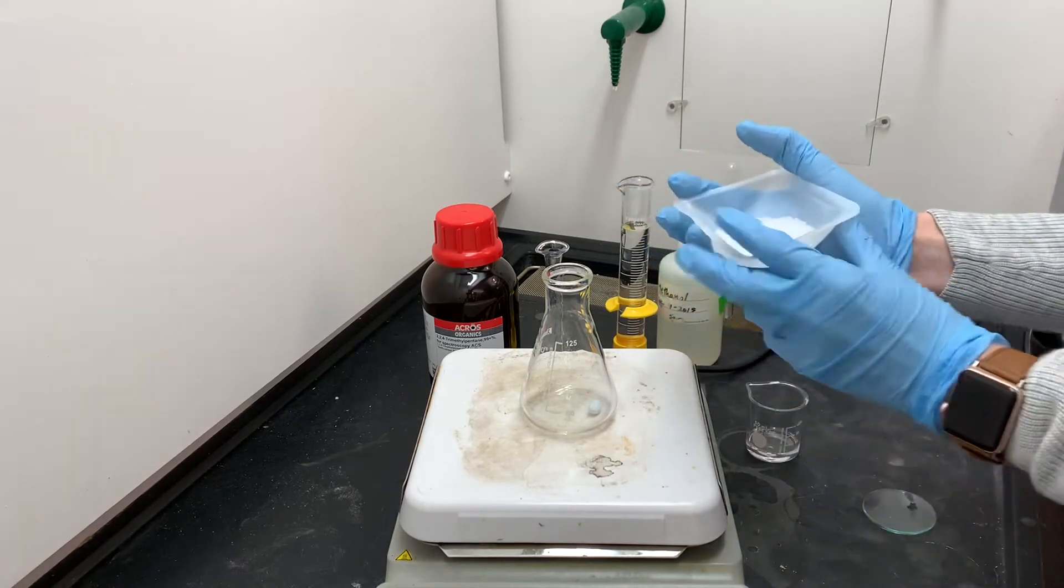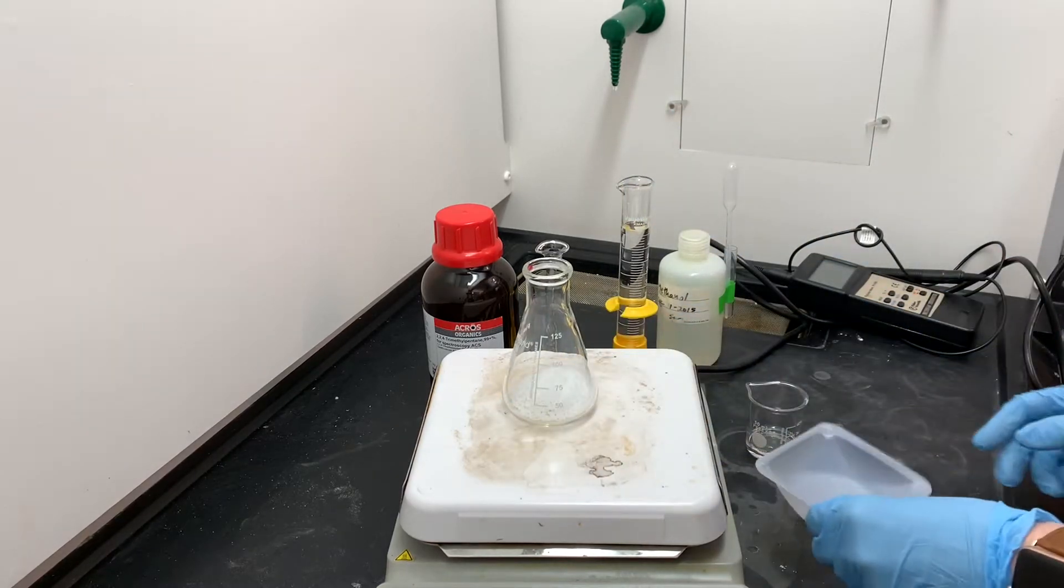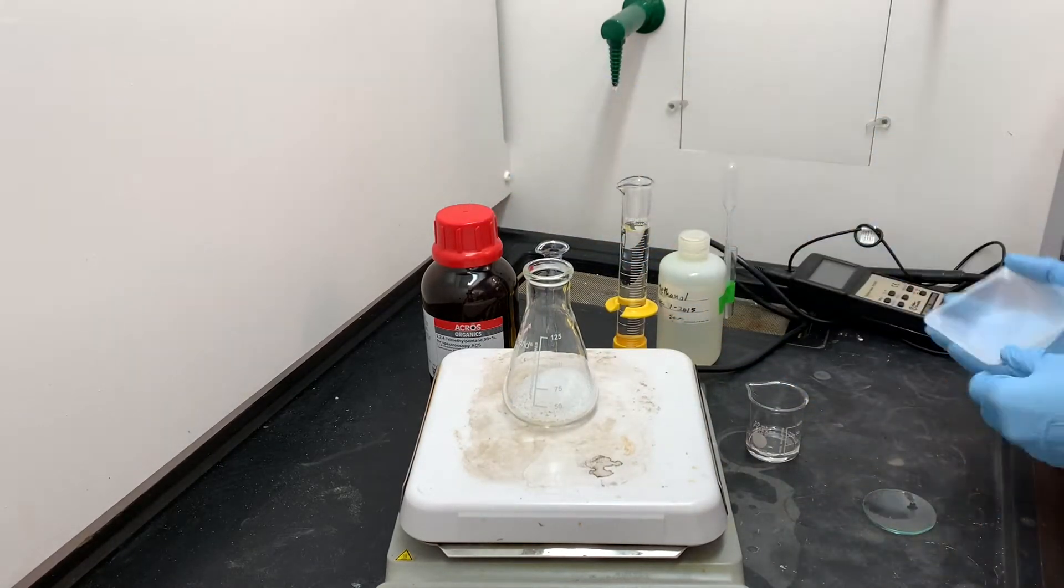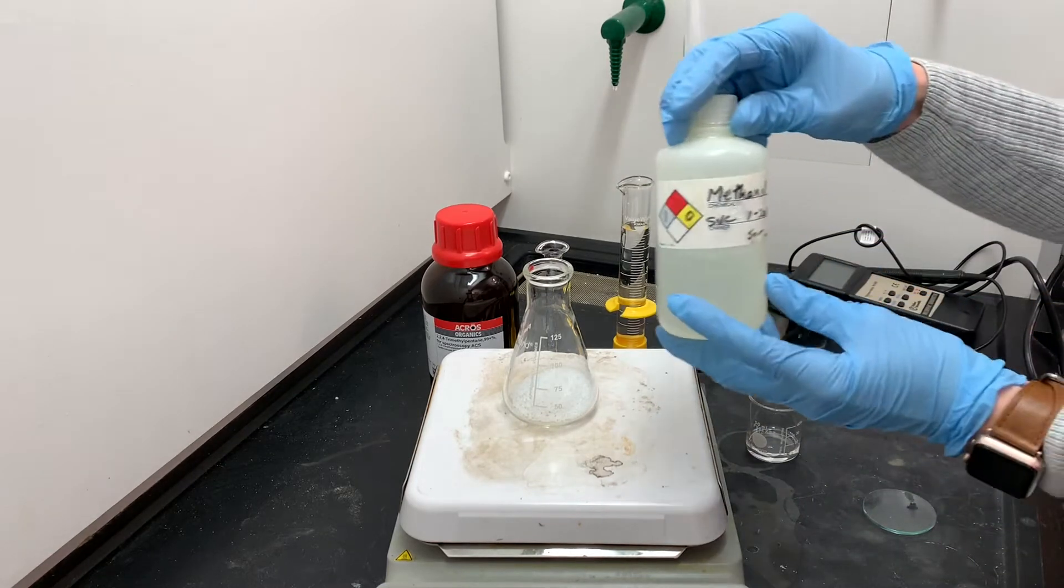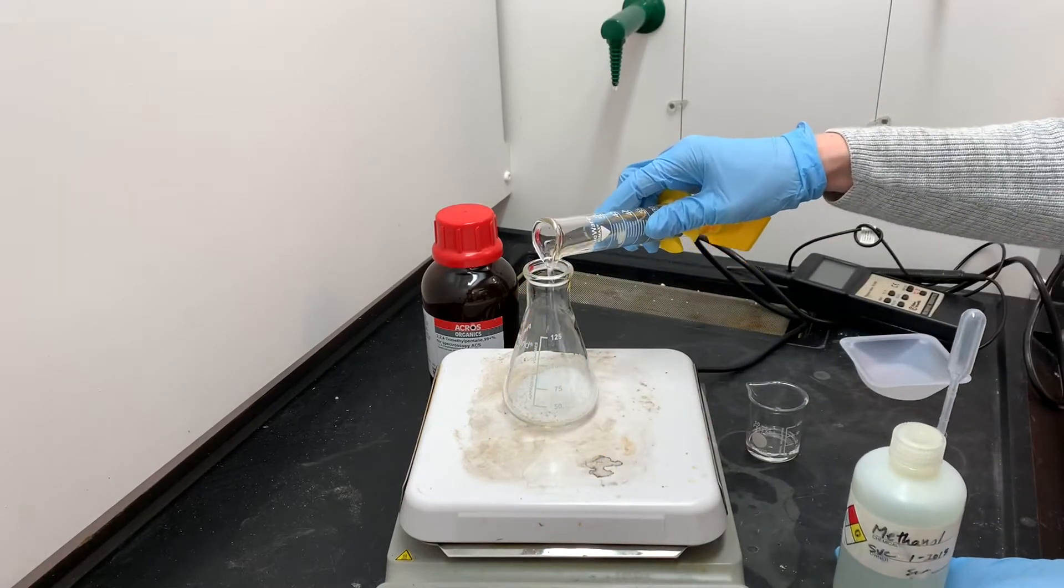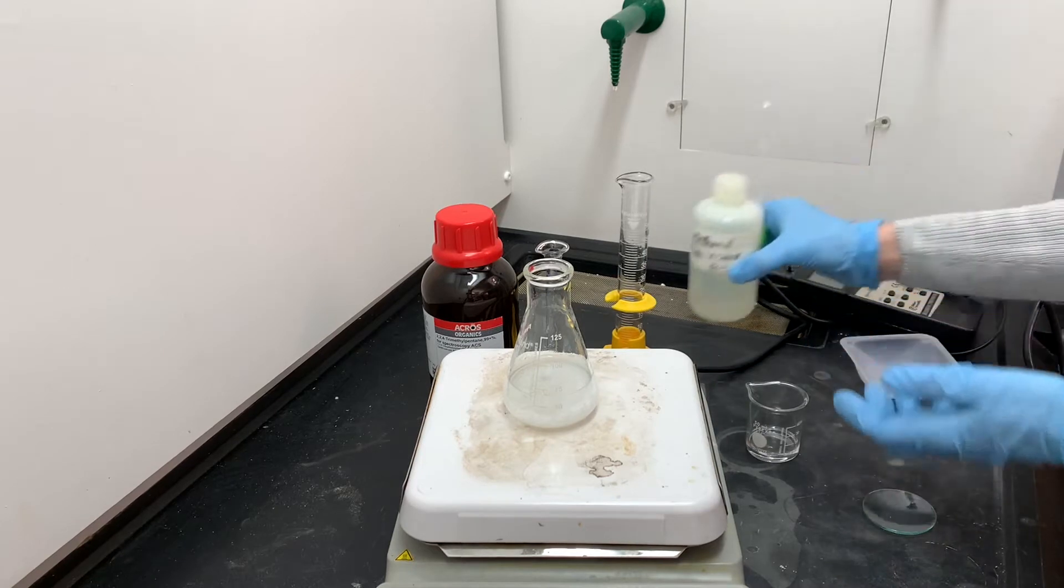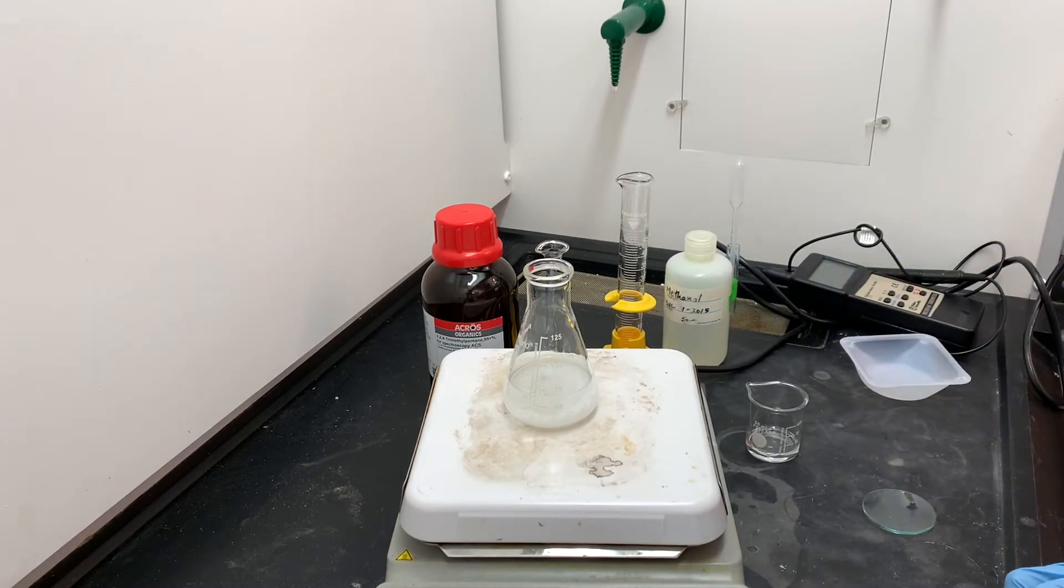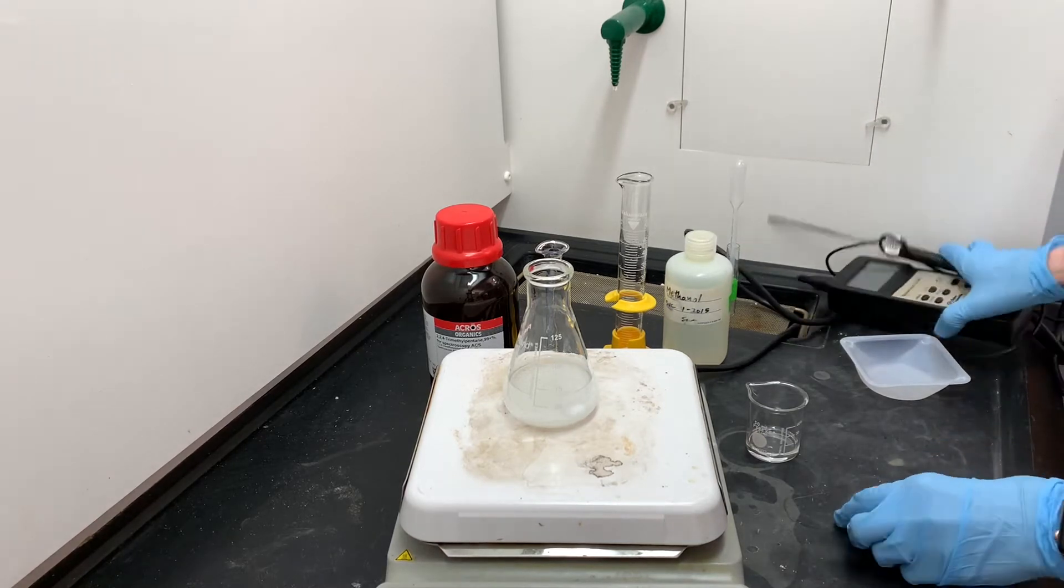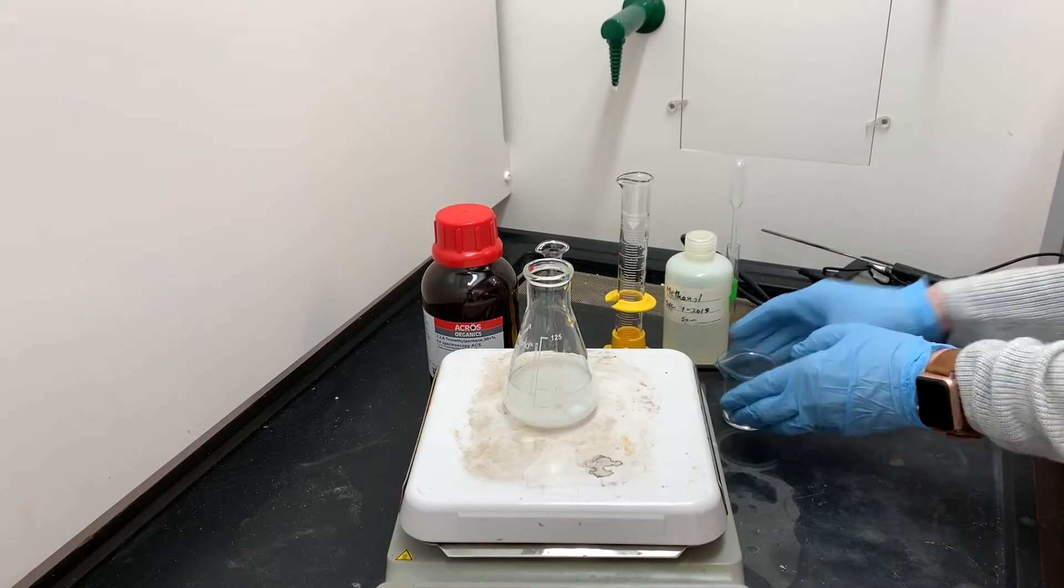Here's all the urea that I measured out. I'm going to be using this Erlenmeyer flask to dissolve the urea. It's really important that I get the urea completely dissolved before I add that mixture of alkanes. I'm going to be using methanol to dissolve the urea, 50 milliliters. The urea is not going to dissolve easily in this methanol, so I'm going to have to help it dissolve. First, I'm going to be using the stirrer on the hot plate, and I'm going to be gently heating the solution to help it dissolve. I'm going to cover up this mixture of alkanes so that none of them evaporate while we're getting this urea dissolved.